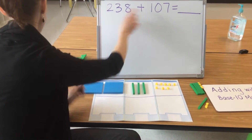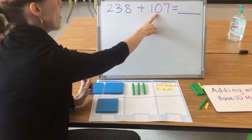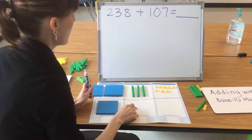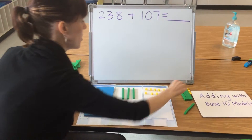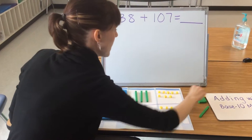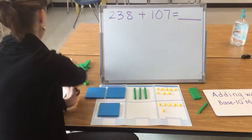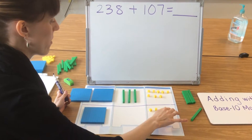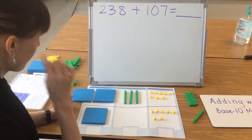And I model 107 with 1 hundred. There are no tens in 107, so I leave my tens place empty and I still need 7 ones: 1, 2, 3, 4, 5, 6, 7. That gives us 100, 101, 102, 103, 104, 105, 106, 107.